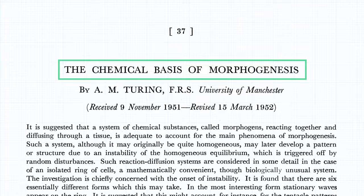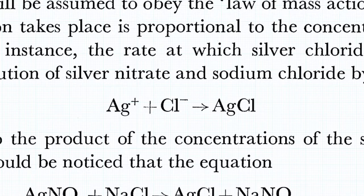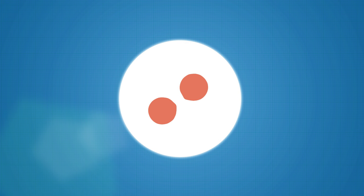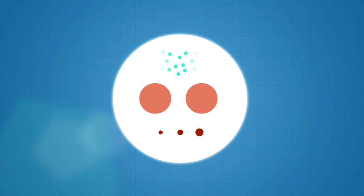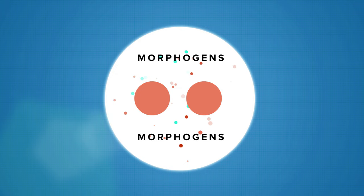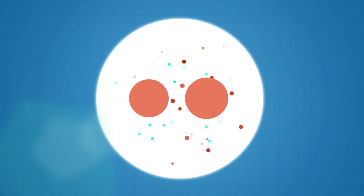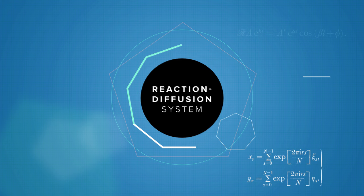While the entire model is too complex to explain here, essentially the system can be broken down like this. Let's say we have two identical cells within an embryo. In the mix are two chemicals that can either activate or inhibit a specific reaction within an embryo's cells. Turing called these morphogens. As these morphogens diffuse through the embryo, they cause the cells around them to transform, ultimately creating patterns like spots, stripes, spirals, hexagons, and whirls.